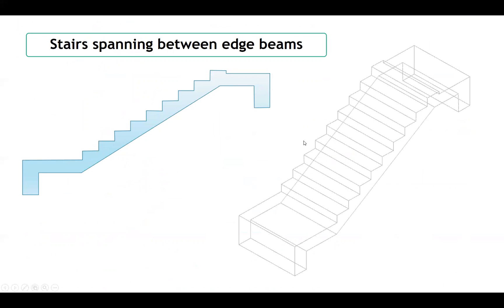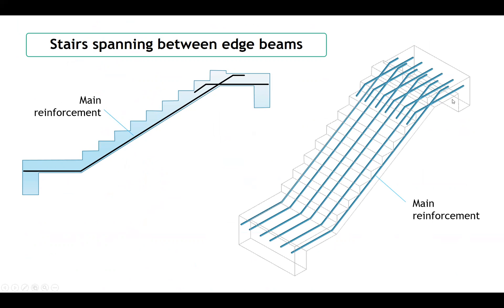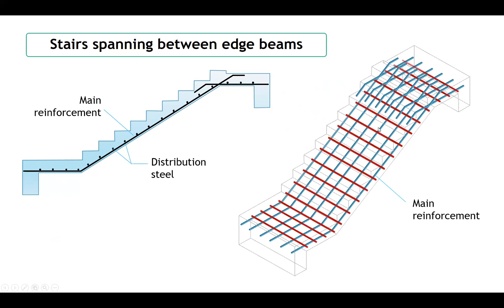Looking at the steel reinforcement in more detail: the bottom steel reinforcement is in the longitudinal direction, going up to the compression side at each end. In the section and in 3D, you can see the bottom steel going to the compression side at both ends. In addition to the main reinforcement, there is distribution steel in the transverse direction shown as circles. The main steel is in the longitudinal direction; the distribution steel is in the transverse direction above the bottom main steel.